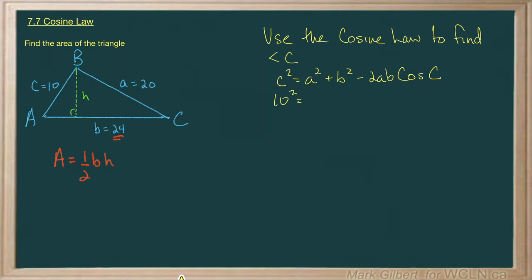10 squared equals 20 squared plus 24 squared minus 2 times 20 times 24 times the cosine of angle C, and that's what we want to find. Let's multiply a little bit of this out. Put in an extra step or two just to avoid making errors. 10 squared is 100, 20 squared is 400.